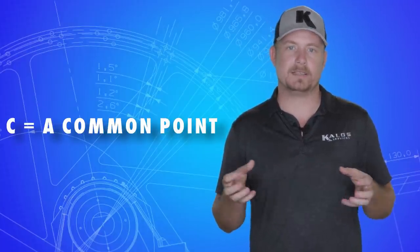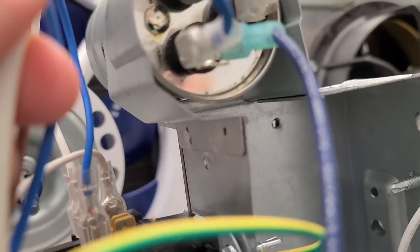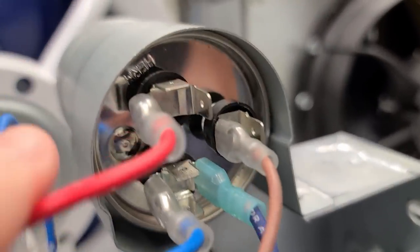In both cases, the C denotes a common point. In the dual capacitor, it's the common point between the fan capacitor and the compressor capacitor, which is marked as Herm.